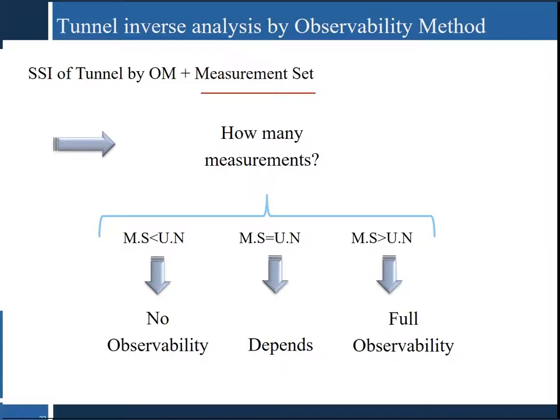At the end, two key questions arise: how many measurements do we need to identify the whole structure, and how should we place sensors and choose measurements? If the number of measurements is less than the number of unknowns, we cannot identify everything. If they are equal, sometimes we can identify all of them, depending on sensor placement. By using a greater number of measurements, we can identify all unknown parameters.